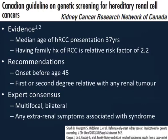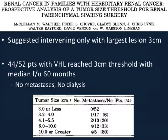An early paper from Dr. Linehan's group at the NCI suggested treating hereditary RCCs by intervening only when the largest lesion measured 3 centimetres. In their 52-patient cohort, 44 patients reached this threshold and required some treatment; the remainder could be observed. At 60 months of follow-up, there was no metastasis and no need for dialysis in any of these patients. They suggested waiting until the largest tumour is 3 centimetres, then intervening and taking as many tumours as can be seen visually and on ultrasound as an ideal approach for patients who will have recurrent tumours.